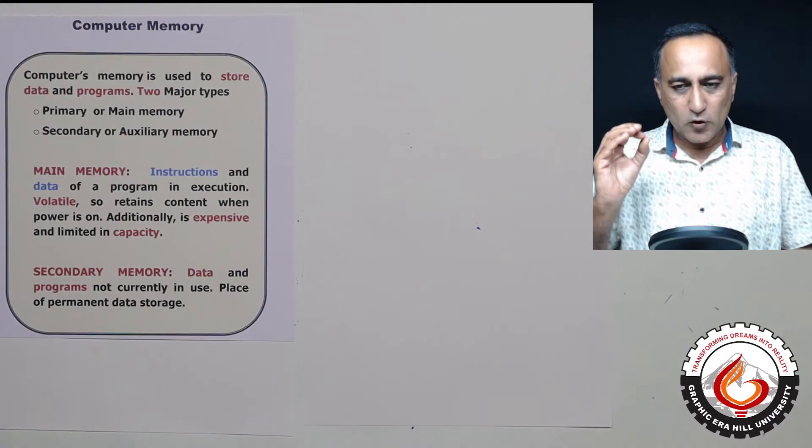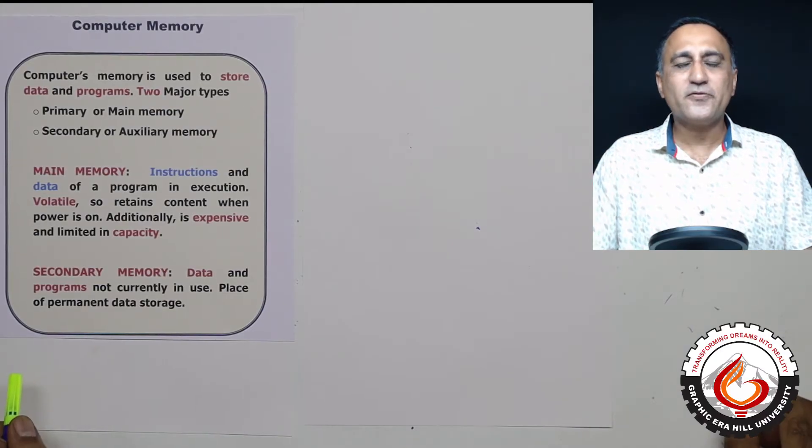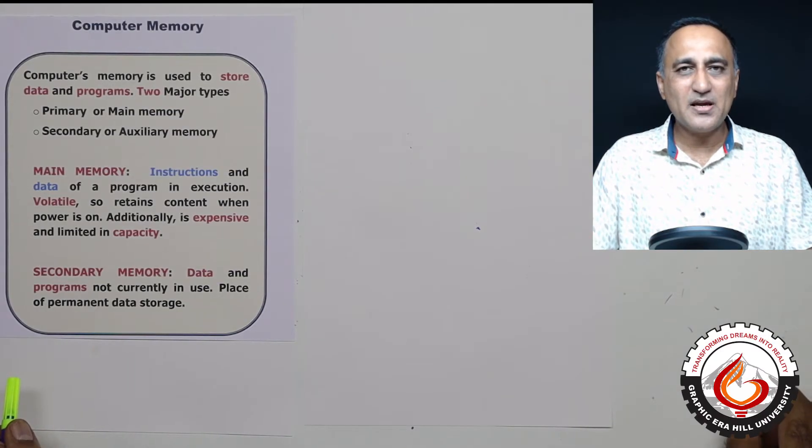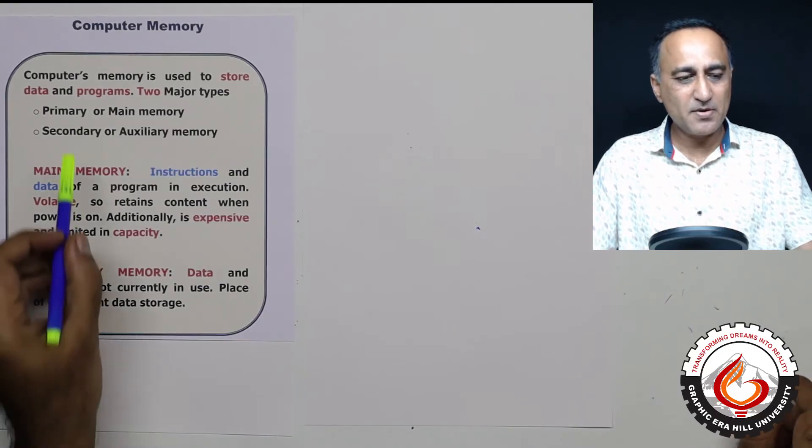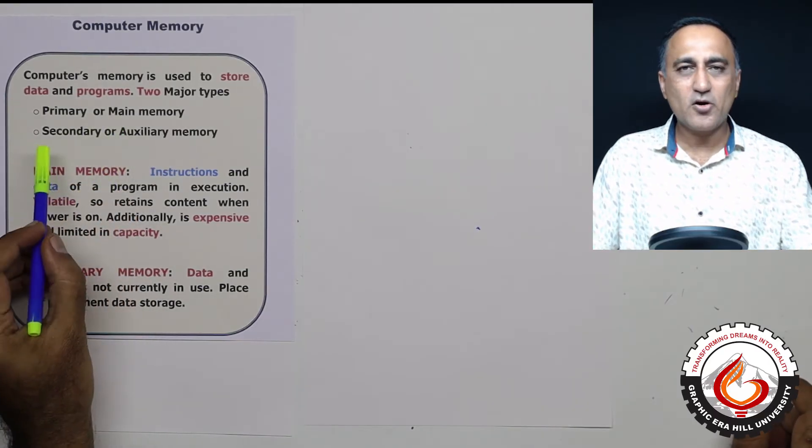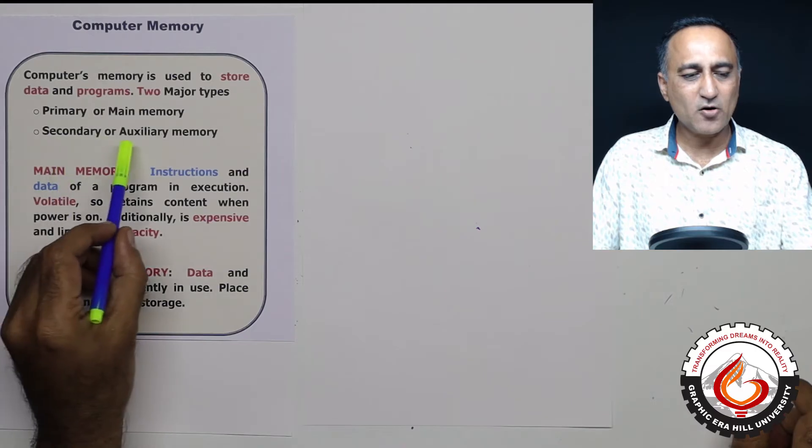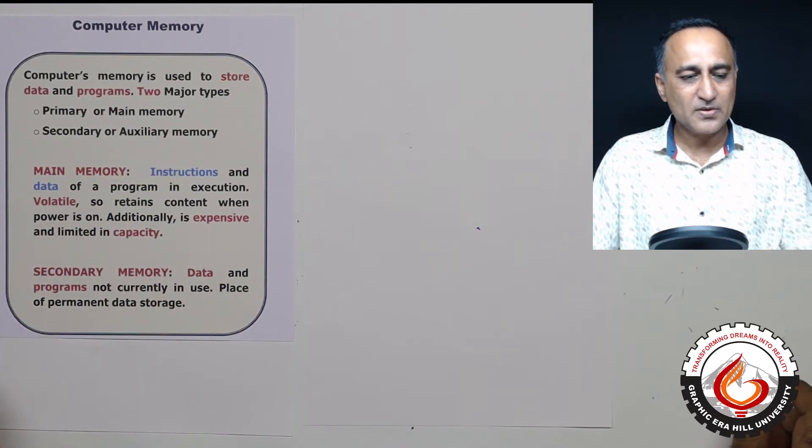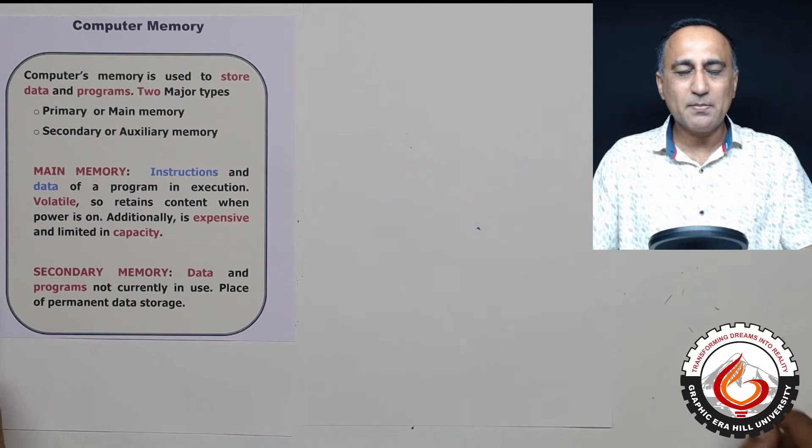So the computer consists of two types of memory. One is the main memory or also known as the primary memory, here it is, or the secondary memory or the auxiliary memory.